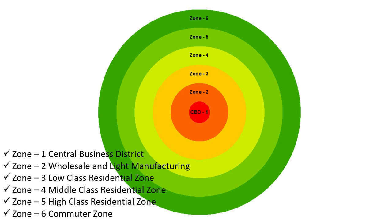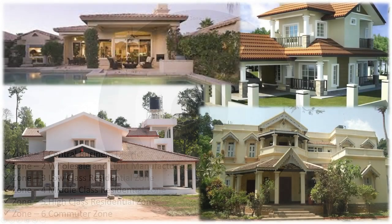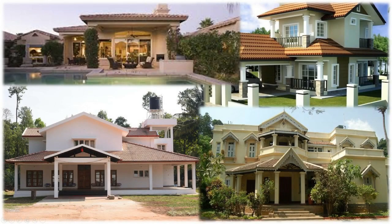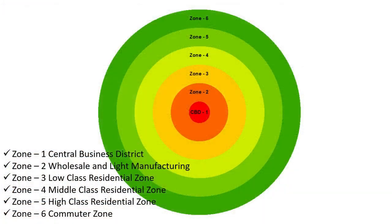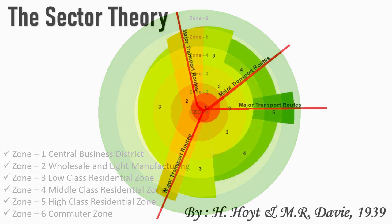Zone Six: Commuter Zone. It is the zone where super high class people prefer to stay. They have very spacious bungalows, farms, etc. They have the ability to commute to the Central Business District every day. It is generally located beyond the city limit, and the area generally turns into suburbs.